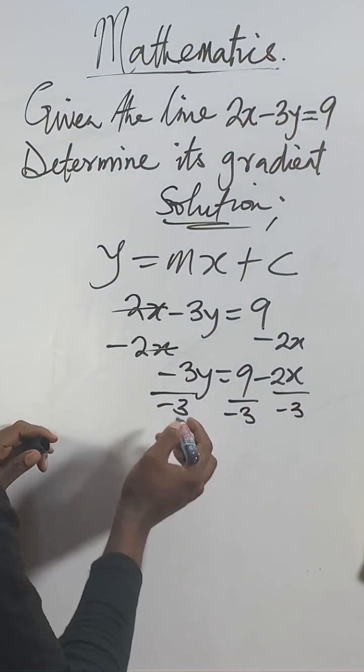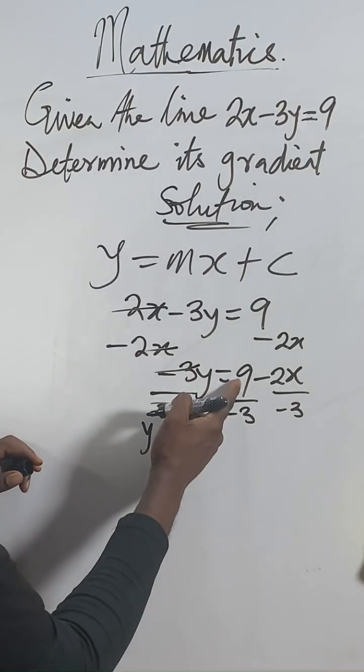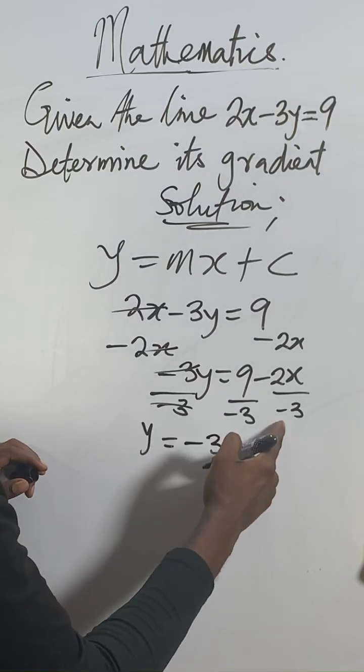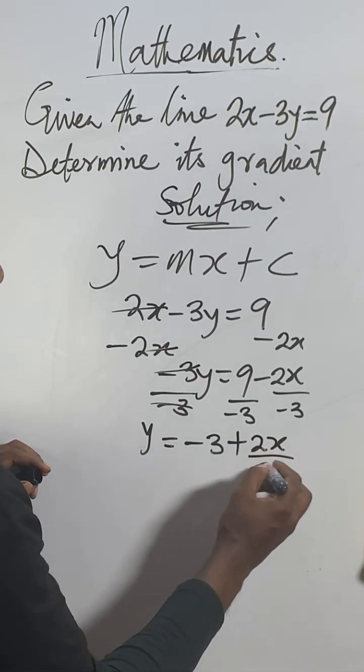This one and this one will cancel. Y now will be equal to 9 ÷ -3 to give us -3. Minus minus we change to plus, then 2x over 3.